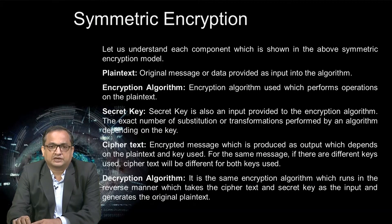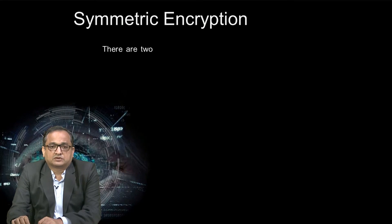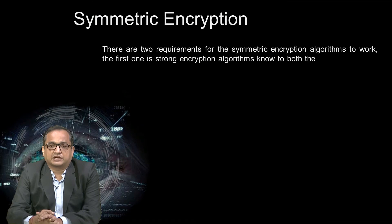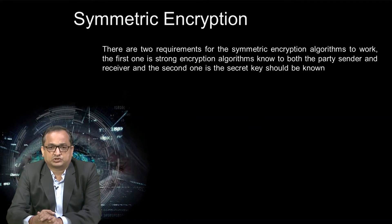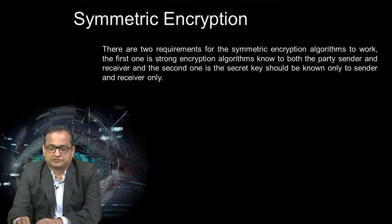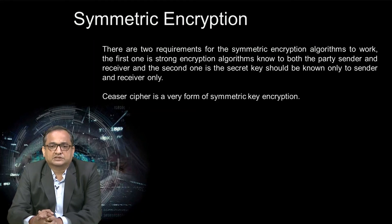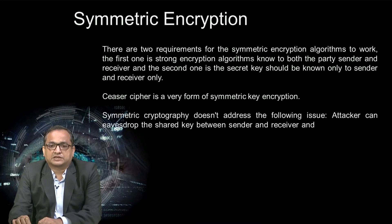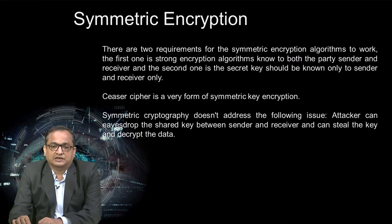This is how symmetric encryption works. There are two requirements: first, a strong encryption algorithm known to both sender and receiver; and second, the secret key should be known only to the sender and receiver. Caesar cipher is a very basic form of symmetric encryption. Symmetric cryptography does not address all issues — attackers can intercept the shared key between sender and receiver, steal it, and decrypt the data.